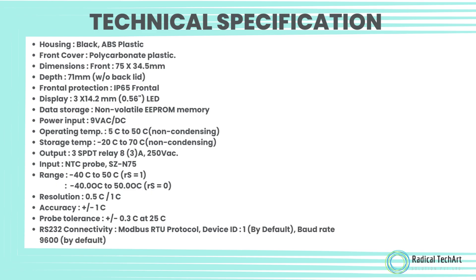Power input: nine voltage AC/DC. Operating temperature: 5 degrees Celsius to 50 degrees Celsius, non-condensing. Storage temperature: minus 20 degrees Celsius to 70 degrees Celsius, non-condensing. Output: three SPDT relay, 8.3 ampere, 250 voltage AC. Input: NTC probe SCN75. Range: minus 40 degrees Celsius to 50 degrees Celsius, RS equals one; minus 40 degrees Celsius to 50 degrees Celsius, RS equals zero.